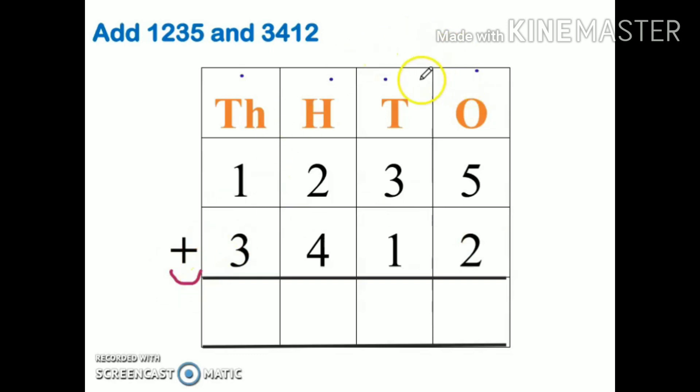Our rule says right to left. Always go from right to left. It means I have to start from one's place, then tens, after that hundreds, and then thousands, and so on.